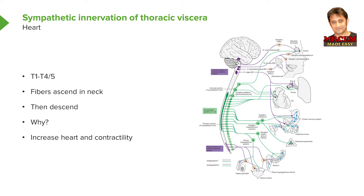For sympathetic innervation of the heart, the preganglionic fibers originate from T1 to T4, possibly as low as T5. Many of these fibers enter the sympathetic trunk, synapse on postganglionic neurons, and then ascend into cervical ganglia: the superior cervical ganglion, middle cervical ganglion, and the inferior cervical ganglion — which commonly fuses with the first thoracic ganglion to form the larger stellate ganglion. Some fibers from more inferior thoracic segments go more directly to the heart.